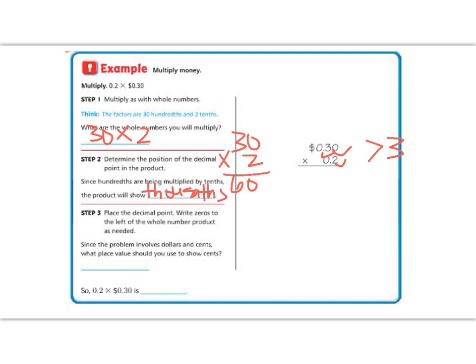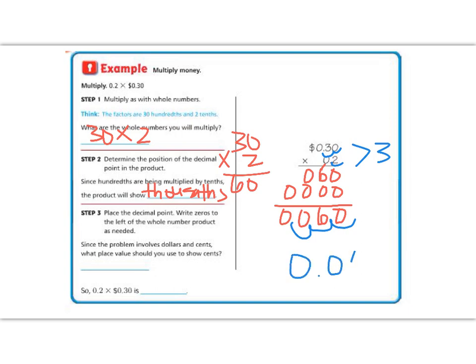Alright, now let's go ahead and multiply to figure out what that number is. So 2 times 0 is 0, 2 times 3 is 6, 2 times 0 is 0. Now I'm going to add my magic 0. 0 times 0 is 0, 0 times 3 is 0, and 0 times 0 is 0. And I'm going to add them together. 0 plus 0 is 0, 6 plus 0 is 6, 0, 0. And now we said we needed to move over three decimal points because I have 1, 2, and 3. So we're going to move over 1, 2, 3.